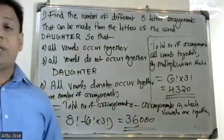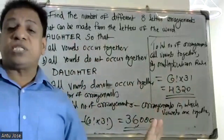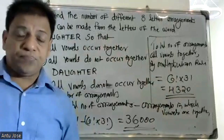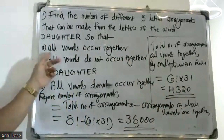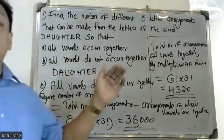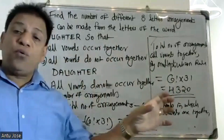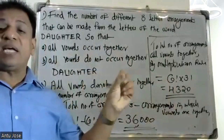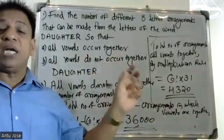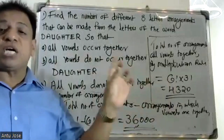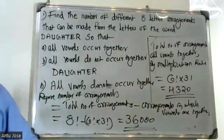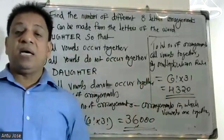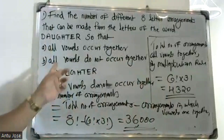First question answer. For all vowels occurring together: treat the vowels A, U, E as a single object, giving 5 consonant letters plus 1 vowel group — 6 objects total.